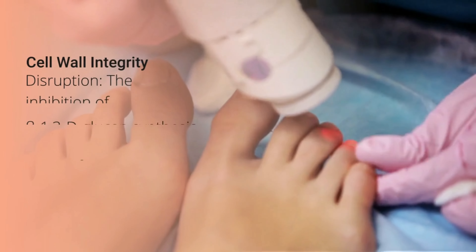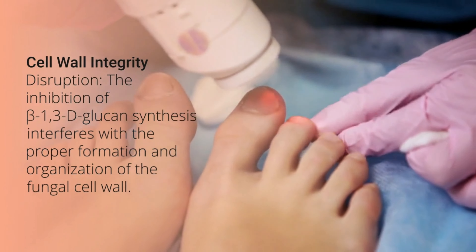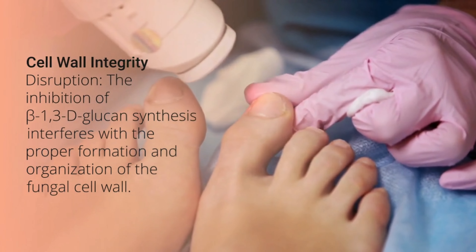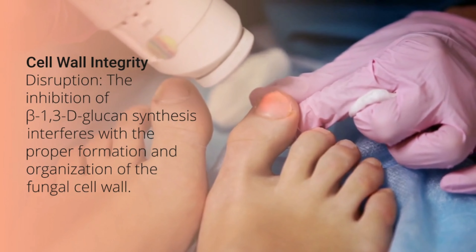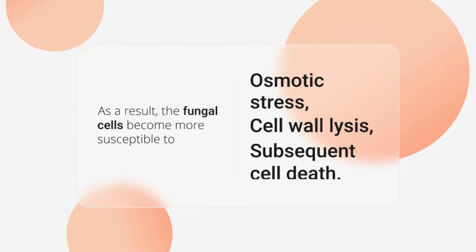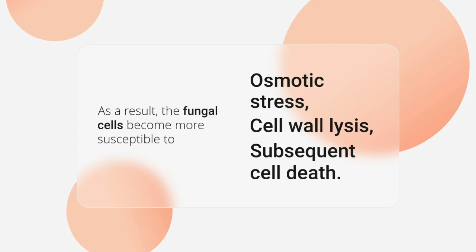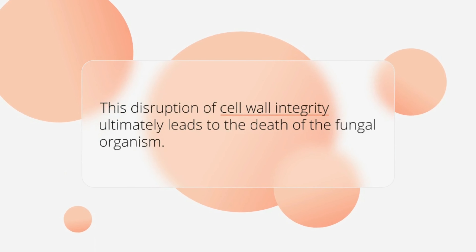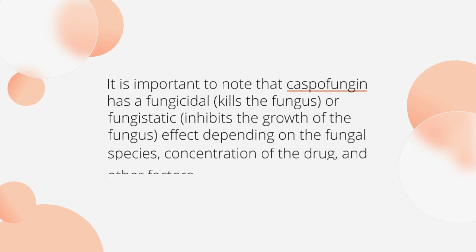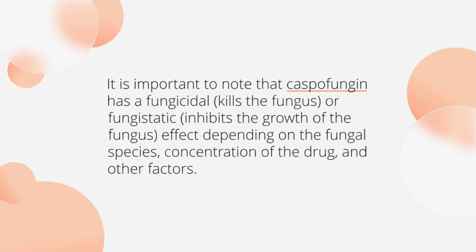Cell wall integrity disruption. The inhibition of beta-1,3-D-glucan synthesis interferes with the proper formation and organization of the fungal cell wall. As a result, the fungal cells become more susceptible to osmotic stress, cell wall lysis, and subsequent cell death. This disruption of cell wall integrity ultimately leads to the death of the fungal organism. It is important to note that caspofungin has a fungicidal (kills the fungus) or fungistatic (inhibits the growth of the fungus) effect depending on the fungal species, concentration of the drug, and other factors.